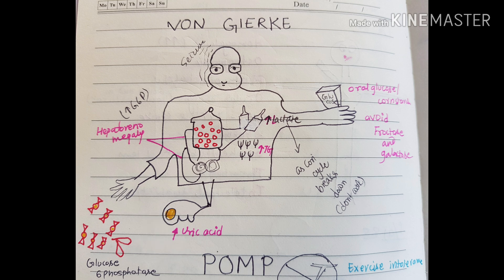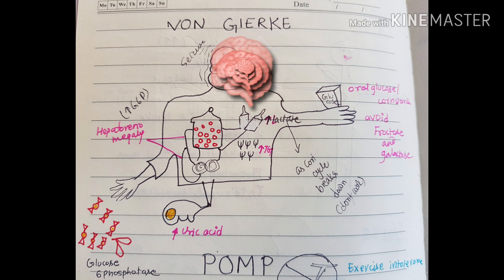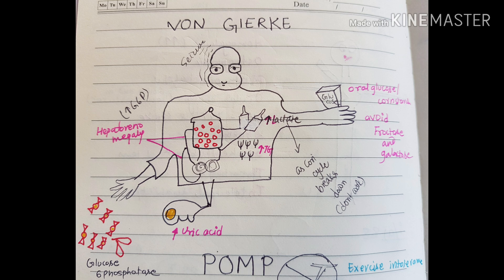The treatment will be represented by the things carried in the left hand — you can see oral glucose or corn starch. The extra information to memorize is that you have to avoid fructose and galactose. You can also see a seizure finding, represented by the blurred lines at the side of the head. This way you can remember every fact about Von Gierke disease.